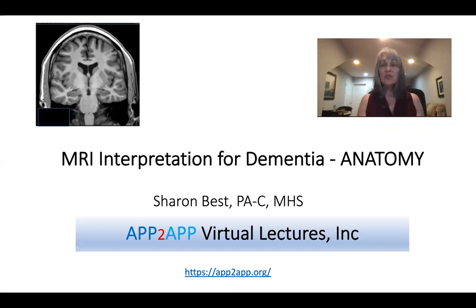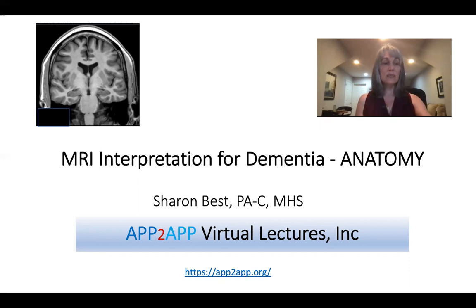Welcome to the first APP to APP lecture. We're so happy to have you. Today's lecture is on MRI interpretation for dementia, focused on anatomy. Even though we're going to be honing in on structures that we look at to help diagnose patients with memory problems, you're going to be learning how to recognize normal anatomical brain structures as you scroll through your MRI. The lecture is really targeted for any provider or clinician that would like to learn how to read MRIs better. We start out very easy and go very slow, and eventually the slides are going to become a little bit more challenging.